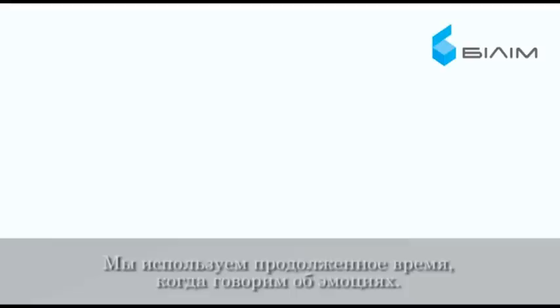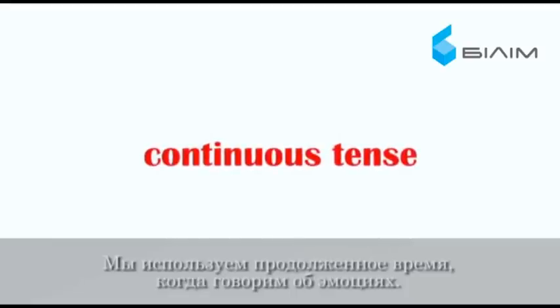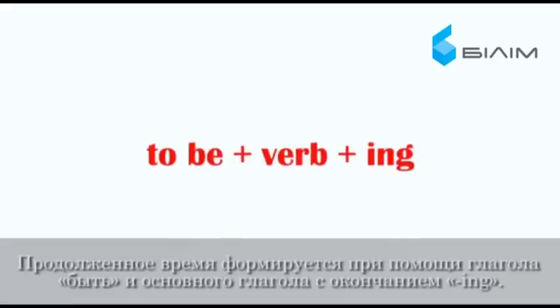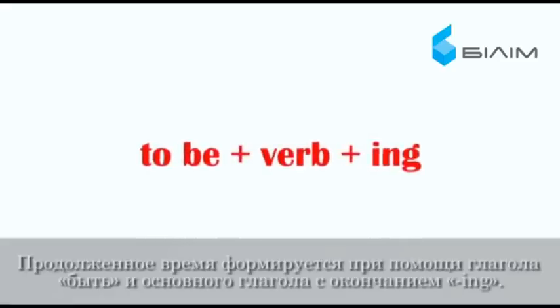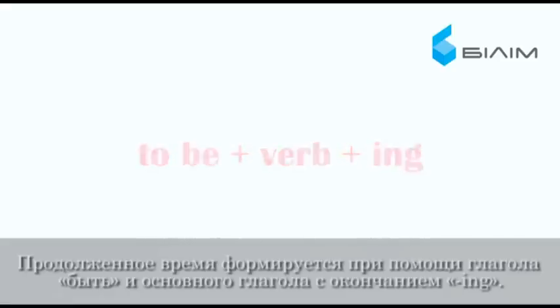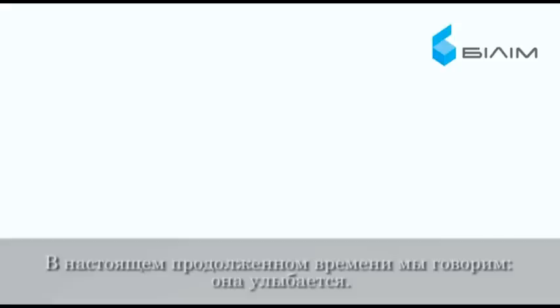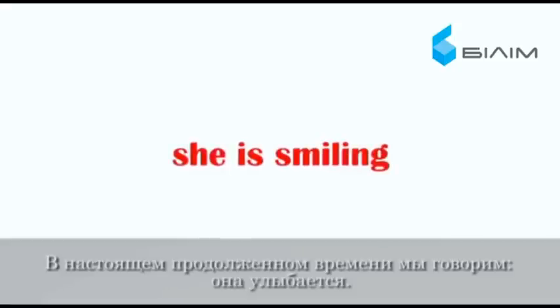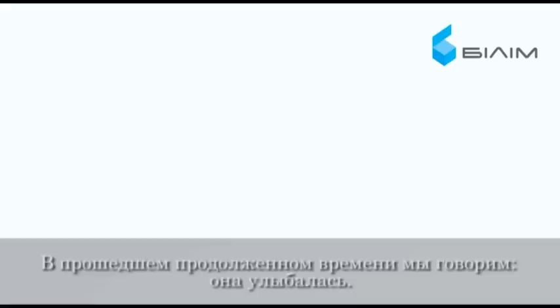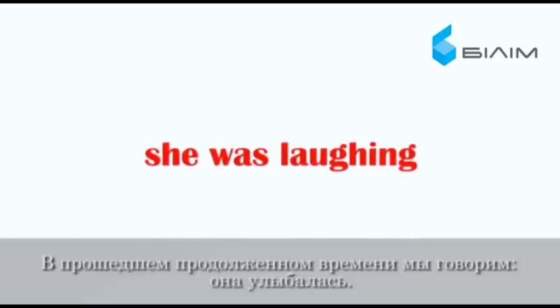We use continuous tense to talk about them. Continuous is made with to be plus verb with -ing ending. In present continuous, we say: she is smiling. In past continuous, we say: she was laughing.